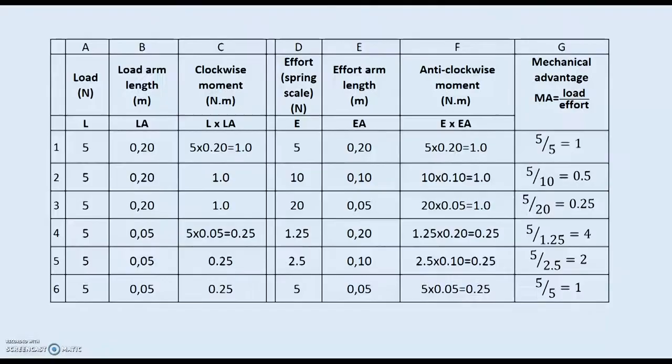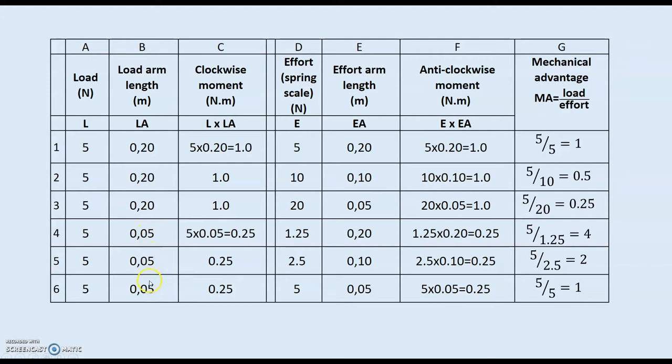These are the results obtained in the measurements. So we had a load of 5 newtons, that's our 500 milliliter water bottle. We first had it 20 centimeters from the fulcrum, 0.2 meters, and later 5 centimeters, 0.05 meters. To work out the moments, you multiply these two numbers. And that gives us 1 for the first lot, and 0.25 for the others.